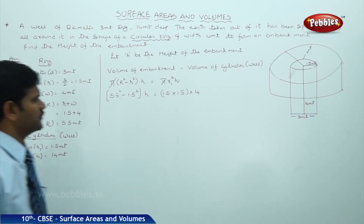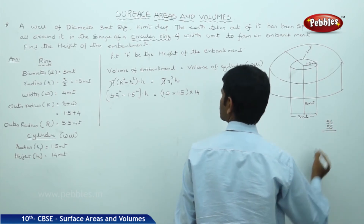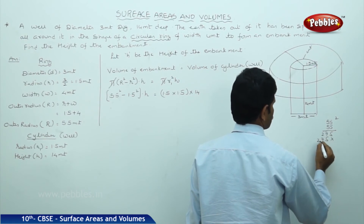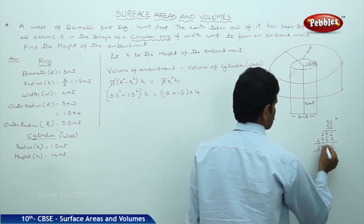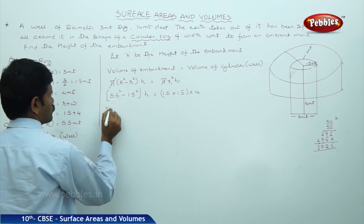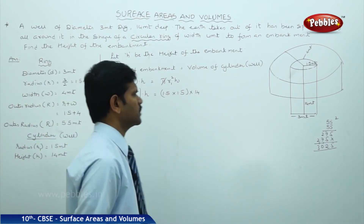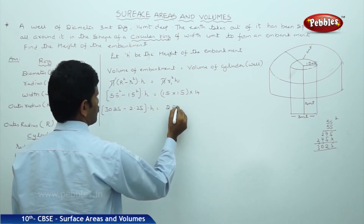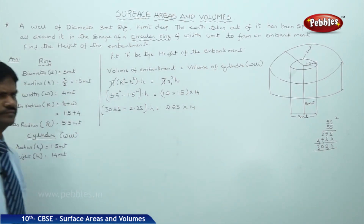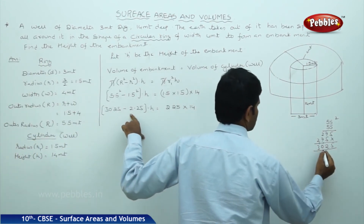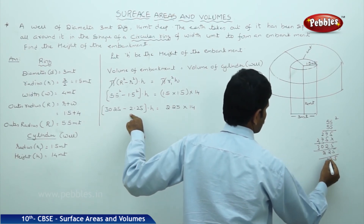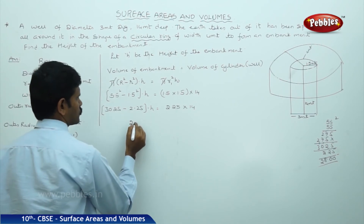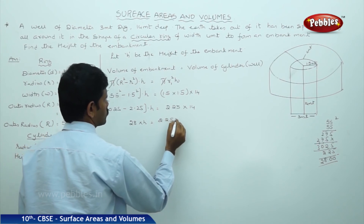Pi cancels on both sides. So: 5.5 squared minus 1.5 squared into H equals 1.5 into 1.5 into 14. Now, 5.5 squared is 30.25, and 1.5 squared is 2.25. So 30.25 minus 2.25 gives 28. Therefore, 28 into H equals 2.25 into 14.